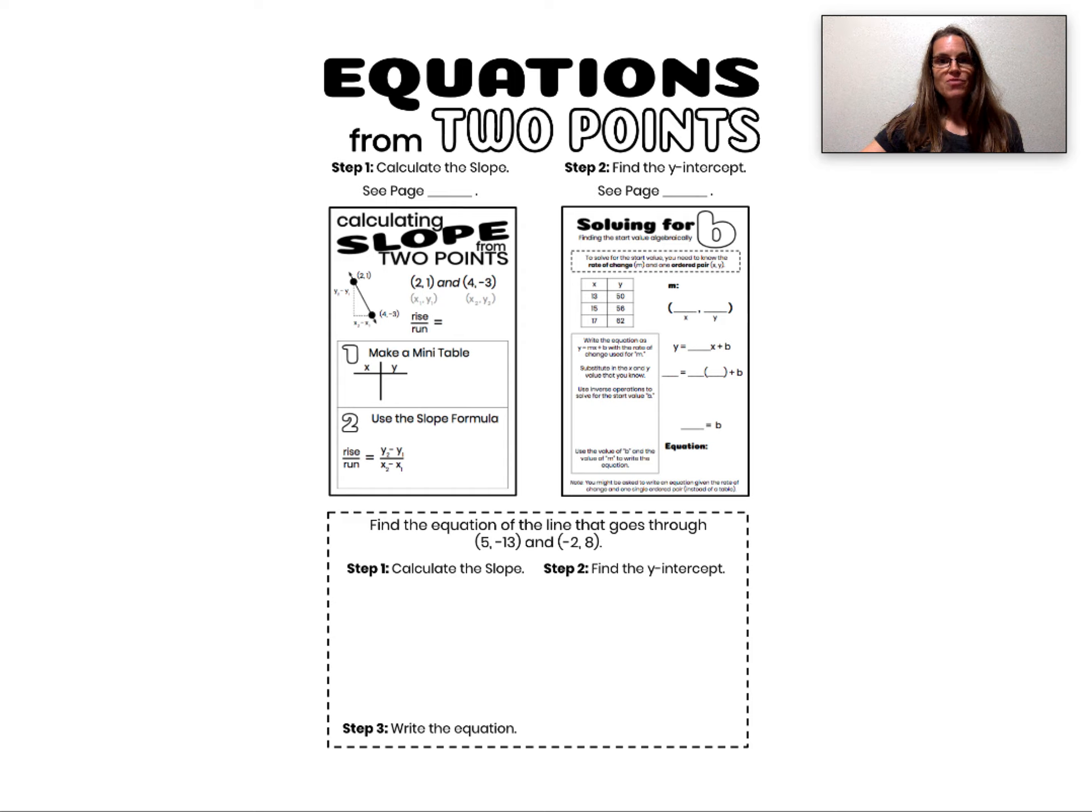In order to find the equation from two points, I need to put together two previous skills. First, I need to calculate the slope from those two points. Then I need to use the slope that I calculated to algebraically solve for the start value. In other words, to solve for b.